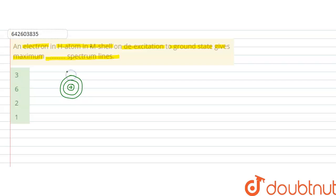and n equals 3 is the M shell. This is K shell, this is L shell, and this is M shell. So M shell means the electron is present in n equals